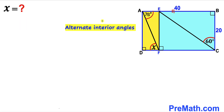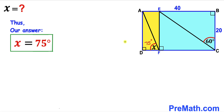In the final step, recalling alternate interior angles: the 75-degree angle and angle X are alternate interior angles, so they are congruent. Therefore, angle X equals 75 degrees — that's our final answer. Thanks for watching, and please don't forget to subscribe to the channel for more exciting videos.